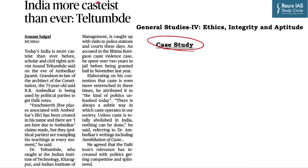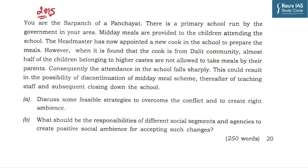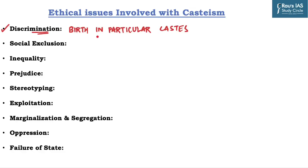Now we will discuss one case study associated with casteism. This article highlights the pervasiveness of casteism, and we will try to understand the various ethical issues associated with the practice of caste system. In 2015, UPSC asked a case study on caste system in which a cook from the Dalit community was employed in a school to prepare midday meals, and many children belonging to higher castes were not allowed to take those meals by their parents. The first ethical issue is discrimination — it results into discrimination among fellow citizens on the basis of birth in a particular caste.